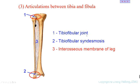The first one is the tibiofibular joint — it's the proximal joint between the tibia and fibula. The second part is the tibiofibular syndesmosis, meaning the two bones are connected by a ligament. The third one: between the two borders of the two bones, they are connected by the fascia or tendon — this is the interosseous membrane of the leg. It's also like the ulna and radius. All of the joints must move together.